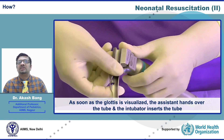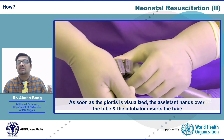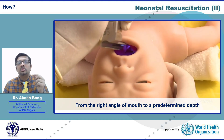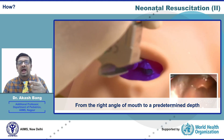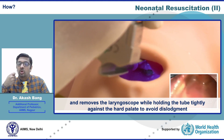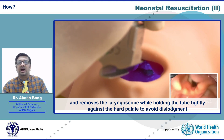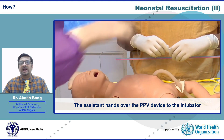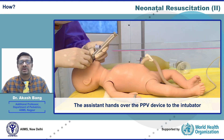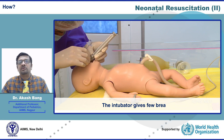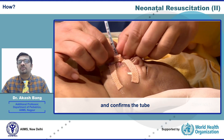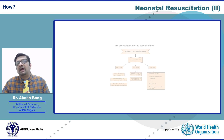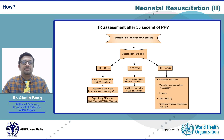As soon as the glottis is visualized, the assistant hands over the tube and the intubator inserts it from the right angle of the mouth to a predetermined depth, then removes the laryngoscope while holding the tube tightly against the hard palate to avoid dislodgement. The assistant hands over the PPV device to the intubator, who then gives a few breaths to confirm tube placement and finally secures the tube.